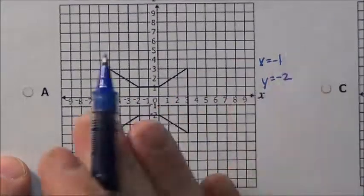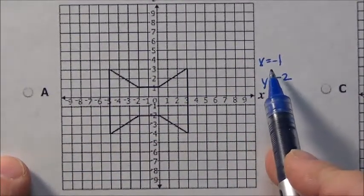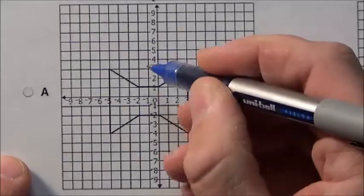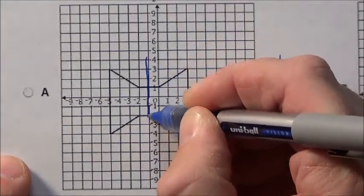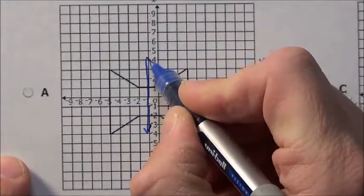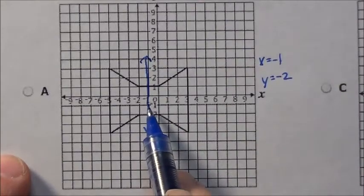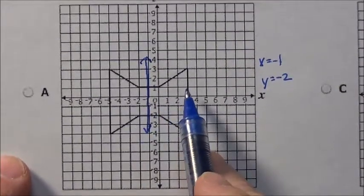That means the item would reflect on itself. Let's draw where the line x equals negative 1 is. That's the line right here. There is x equals negative 1. That is going to be a line of symmetry.